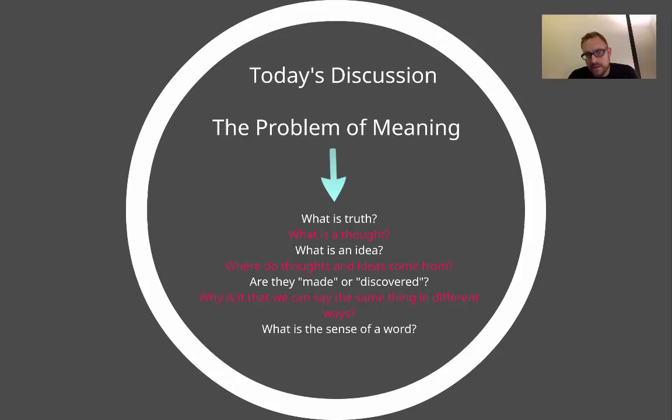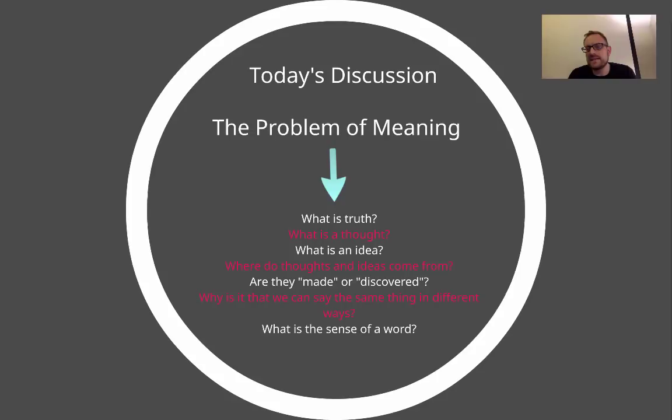Today's discussion is on this problem of meaning. Here are some of the problems we're going to see Frege begin to discuss. First is: what is truth? What is a thought? What does it mean to think? What is an idea — how is that different from having a thought? Where do these thoughts and ideas come from? Some of our ideas seem to come from us and some seem to come from others. Another way of asking the same question is: are our thoughts and ideas made or are they discovered?